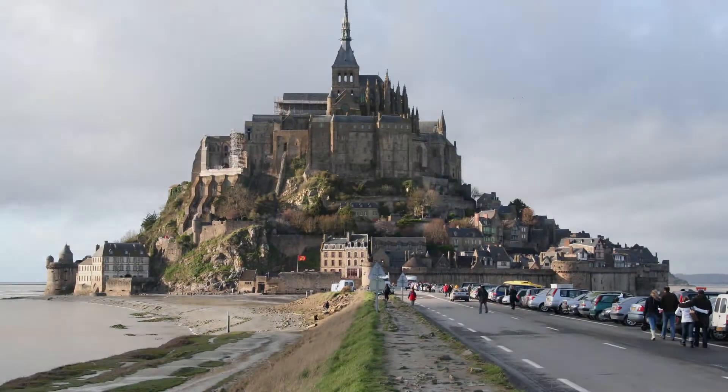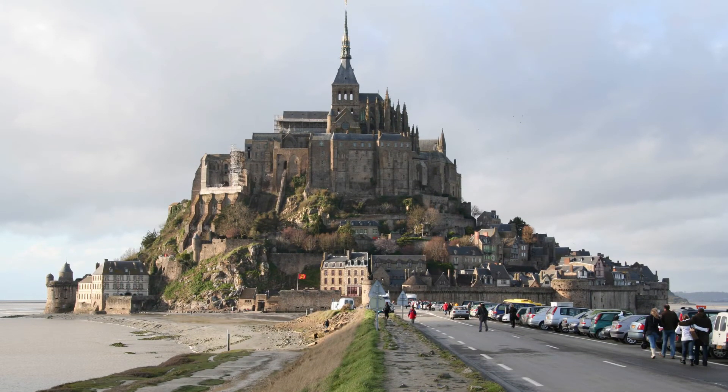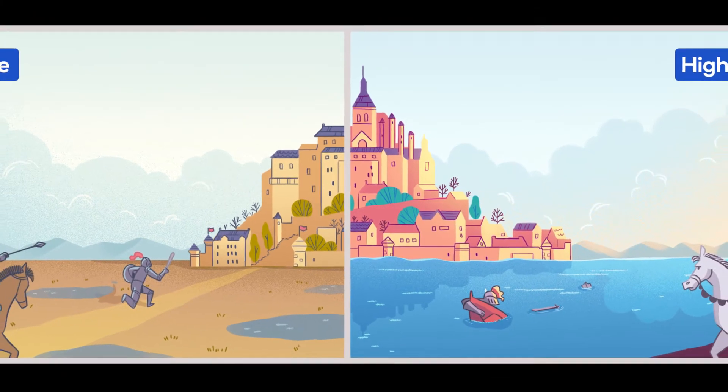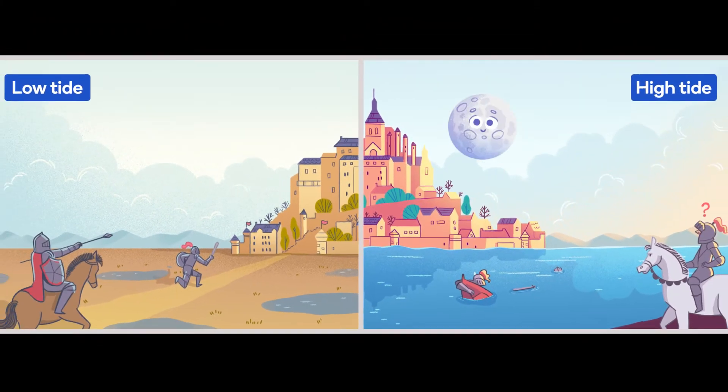And find out how Mont Saint-Michel, a small monastery in France, was able to defend itself through the Hundred Years War, all with a little assistance from the Moon.